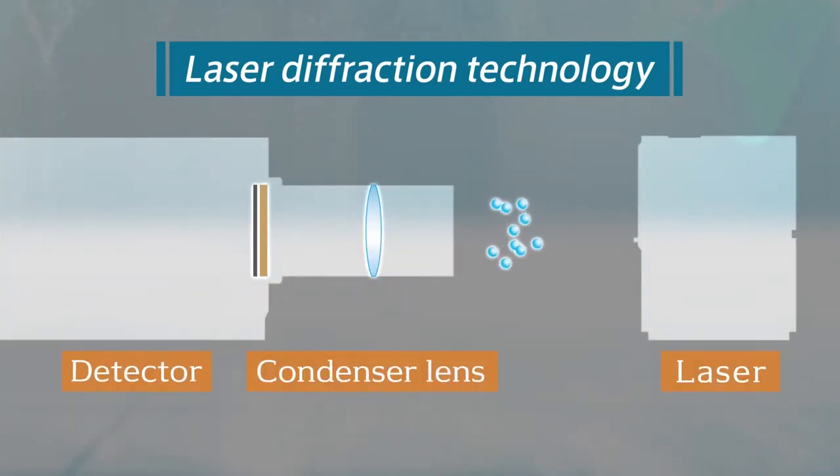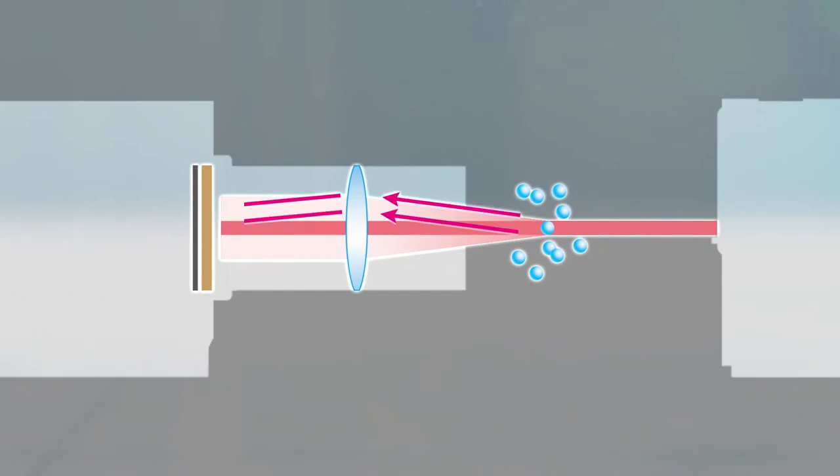Aerotrack 2 deploys laser diffraction technology for measurement. When droplets are irradiated with a laser, the laser light is scattered.